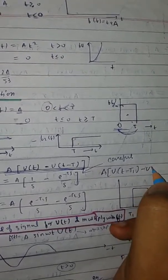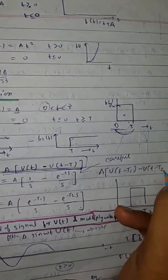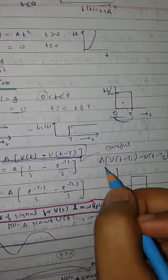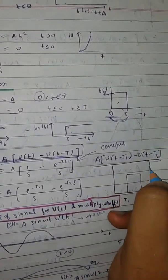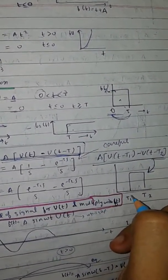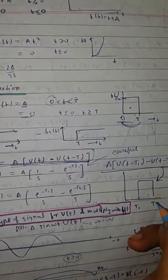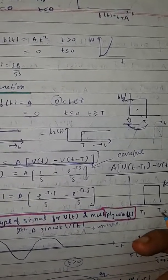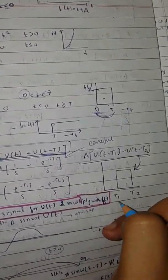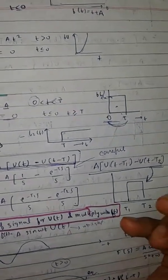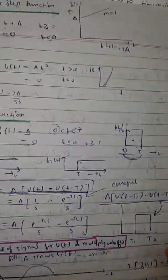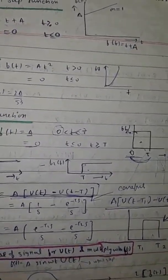You can also have this scenario when it starts from t1 and ends at t2. Then it becomes A times u(t minus t1) minus u(t minus t2). This is also a scenario when your starting point has some delay t1 and the ending also has some delay. This is generally a kind of impulse function, and this is its equation.